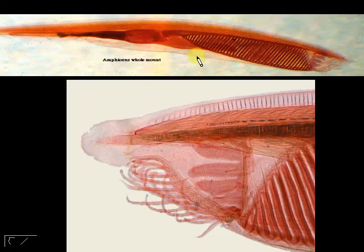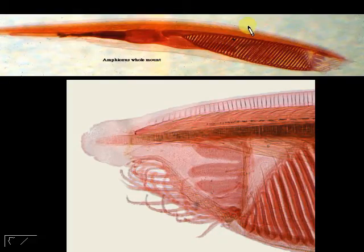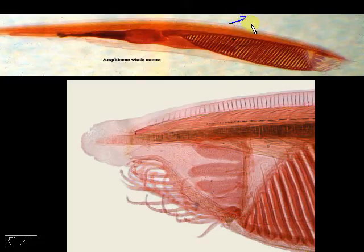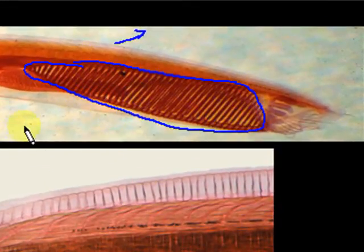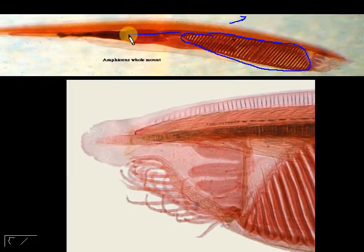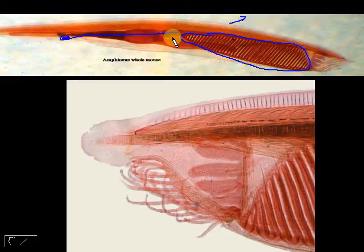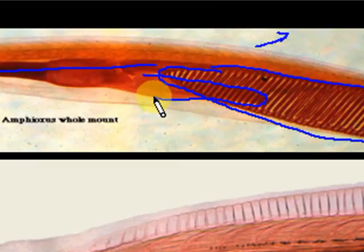Looking at the internal anatomy of amphioxus from a whole mount, some structures we can name: on top is the median dorsal fin. There is the nerve cord on top, and underneath that is the notochord. This entire structure is the pharynx, which eventually leads to the intestines, and somewhere here is the anus. You will also notice a dark shade — that is the hepatic cecum, or hepatic diverticulum.